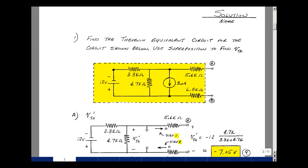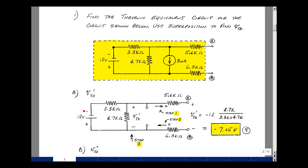In problem number one, we're given a circuit and asked to find the Thevenin equivalent between terminals A and B, but also to find the Thevenin voltage using superposition. So let's start with that. We'll find V Thevenin due to the first source, the 12 volt source. We'll set all the other sources equal to zero, that's just the 3 milliamps, so we'll make that an open circuit.